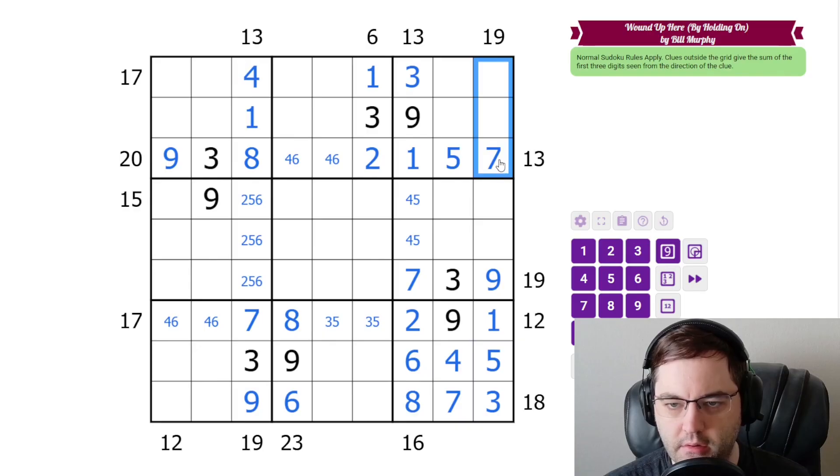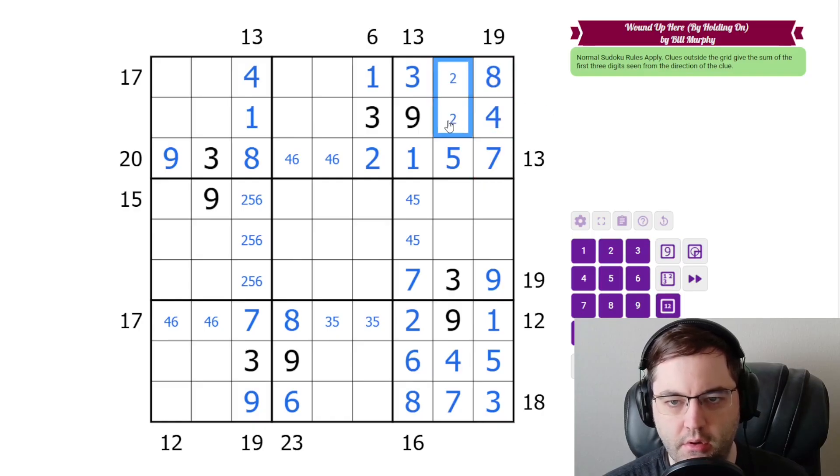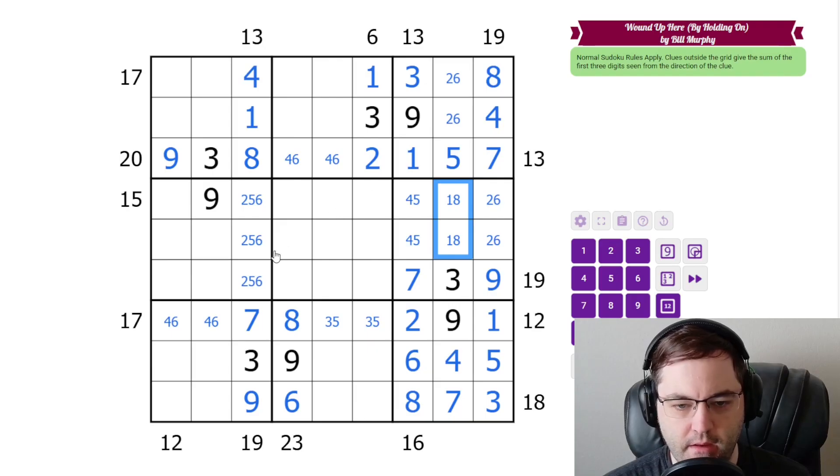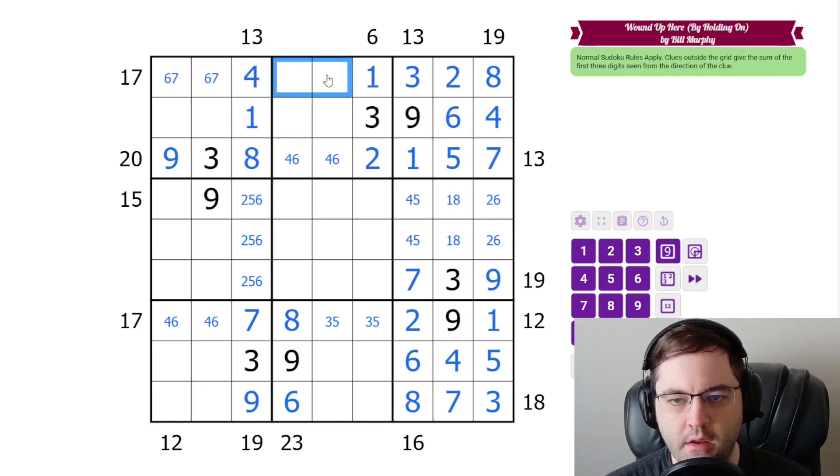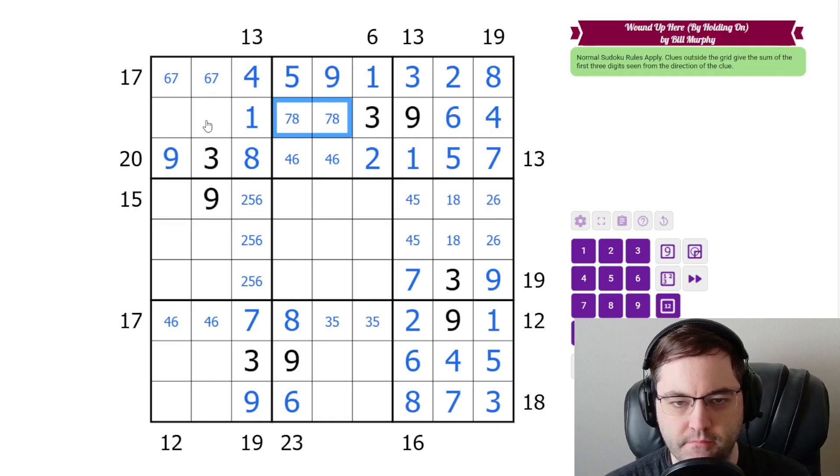19 here with the seven, we need 12. Can't have three, nine, or five, seven. So this must be eight and four. These are two, six. These are two, six. These are one, eight. The 17, we need 13 in the remaining cells. We can't have four, nine or five, eight. So this must be six and seven. That's going to resolve our two, six. These are five and nine. These are seven, eight, two, five.